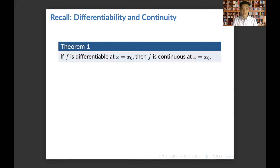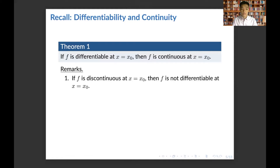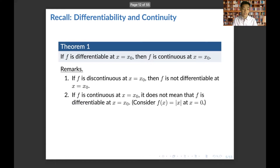Next, we have this theorem: if f is differentiable at x equals x0, then f is continuous at x equals x0. Basically, differentiability implies continuity. Remark one follows: if f is discontinuous at x0, then f is not differentiable at x0. This is the contrapositive of the theorem, and a contrapositive always has the same truth value as the original statement. Remark two: if f is continuous at x0, it does not mean that f is differentiable at x0.